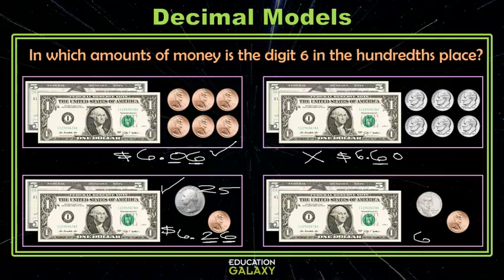Lastly, I have six whole dollars, and I have a nickel, which is five cents, and a penny. So, that gives me six cents. So, again, I have a six in the hundredths. Here, we have three correct answers. Okay, your turn to try decimal models.